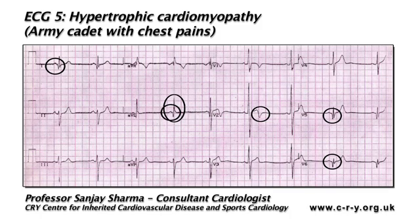The ECG in hypertrophic cardiomyopathy does not have any distinct patterns. Almost any ECG pattern is recognized in hypertrophic cardiomyopathy. However, the most common ECG abnormalities include deep S waves in leads V2 and V3, ST segment depression, T wave inversions, pathological Q waves, and left bundle branch block. I also consider left axis deviation as abnormal, and this may be the only single abnormality on the ECG raising suspicion of an underlying cardiomyopathy.